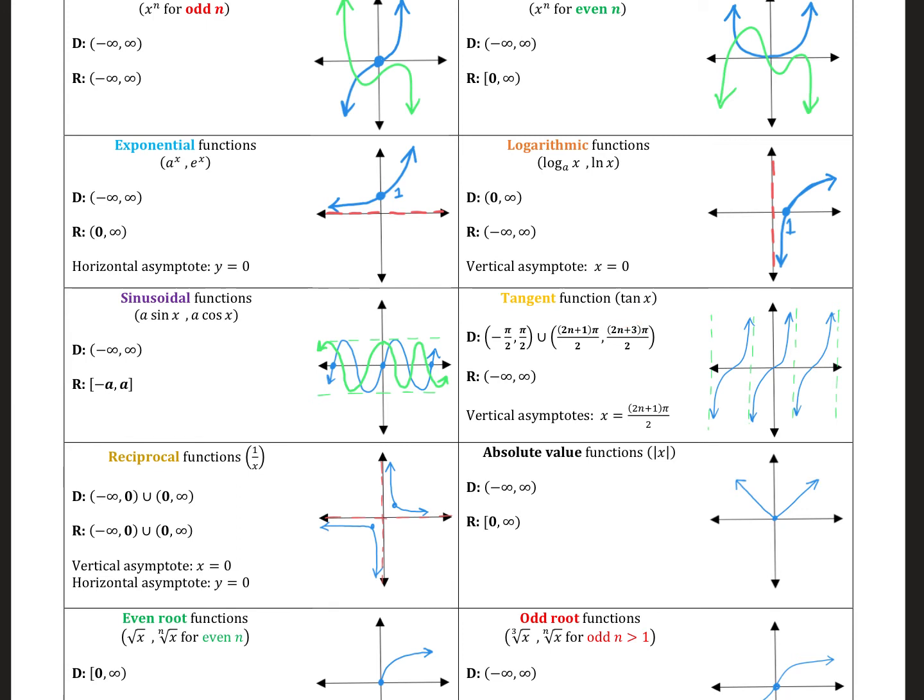So then these vertical asymptotes, again, occur, they're pi units apart. So negative pi over 2 to pi over 2, pi over 2 to 3 pi over 2, so on and so forth. Again, if there's transformations performed, again, that might change.